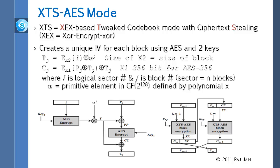Looking at the picture: you give I and key K2, do AES encryption, then multiply by alpha raised to J — that gives you the tweak, and you use it at two places. You take the plain text, Exclusive-OR with the tweak, encrypt, and Exclusive-OR again. That gives you the cipher text.